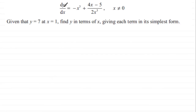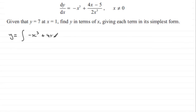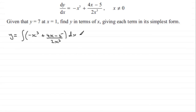First of all, to find what y would be generally, y equals the integral of the two terms we've got here. So we start with y equals the integral of minus x cubed plus 4x minus 5, all divided by 2x cubed. Thinking of integration as the inverse of differentiation, y equals the integral of this with respect to x. We're integrating two terms, so we put that in brackets and integrate with respect to x.